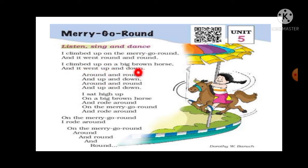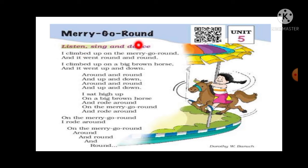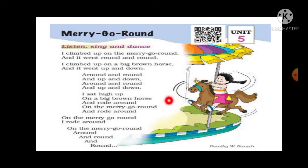I climb up on a big brown horse, and it went up and down. Here the child is riding on the brown wooden horse, and it went up and down — meaning the horse moves up and down. So the horse goes up and down, and the Merry-Go-Round goes round and round. The child looks so happy while riding on the horse.